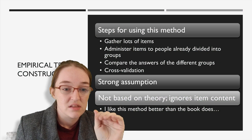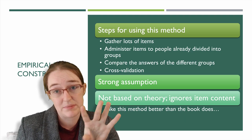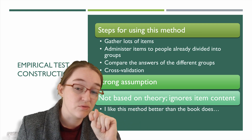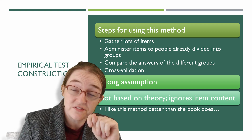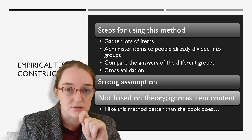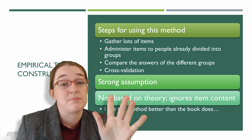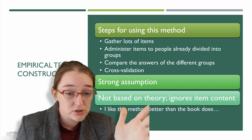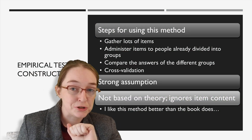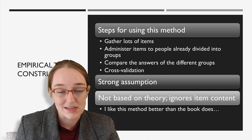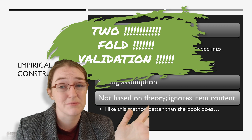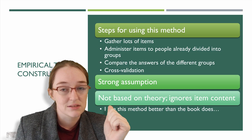There are a lot of strong assumptions to this and it can be really problematic. The basic assumption is that certain kinds of people — those grouped into distinct categories — have distinctive ways of answering certain questions. So all you have to do is find the questions that distinguish them, then cross-validate.